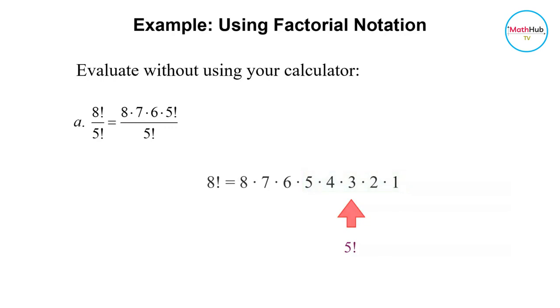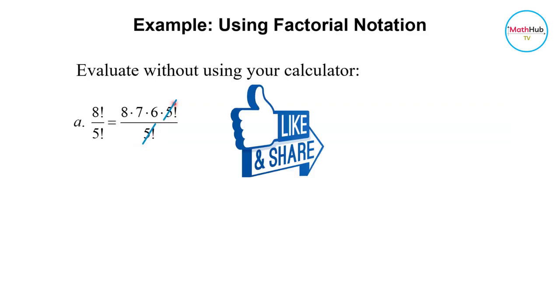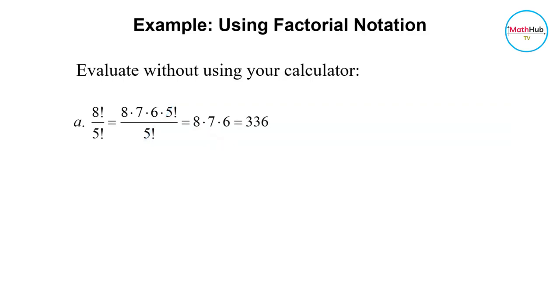Looking at this one, we notice that we can cancel 5 factorial in the numerator and in the denominator. So this will cancel out and that leaves us with 8 times 7 times 6 which is equal to 336.